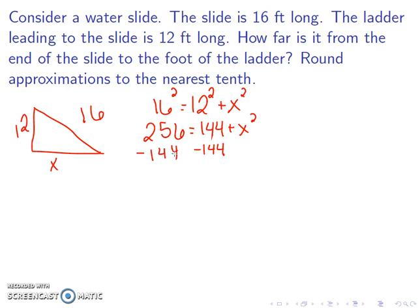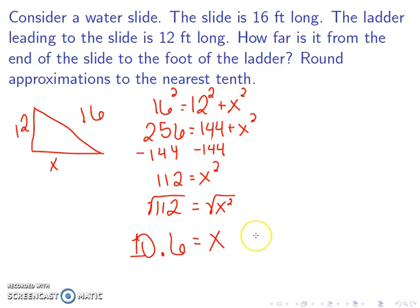This gives 112 equals x squared. We'll then want to take the square root of both sides to get rid of the x squared. In general, when we take a square root, we want to take the positive and negative square root. However, in this case, since we're dealing with a distance, a negative number wouldn't make sense, so we'll just deal with the positive. Rounding to the nearest tenth gives me 10.6 equals x.